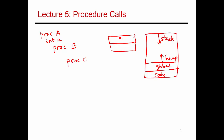The stack now accommodates the variables declared inside procedure B that are local to it. Procedure B may have declared a variable integer x, so x gets placed on the stack. Then when you call procedure C, again the stack grows in size, and procedure C may have declared variable y, so y gets placed on the stack and so on.